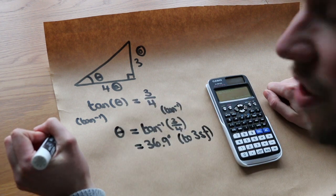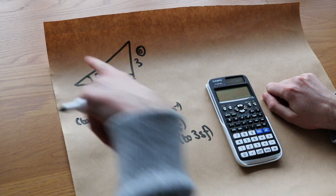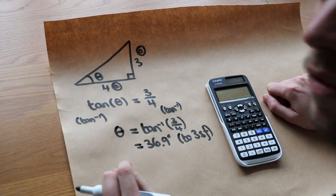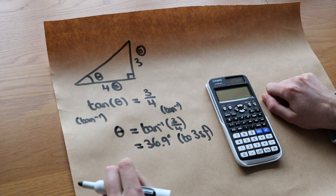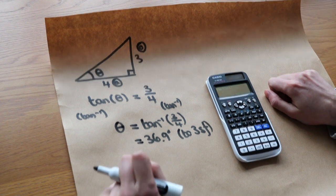We always do a sensible check. Is our answer sensible? Let's look at here. That side's shorter than that. 36.9, 37 degrees, that looks about right, doesn't it? So our answer is probably right. Let's do just a second one to cement that.